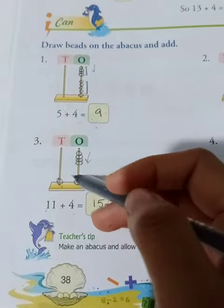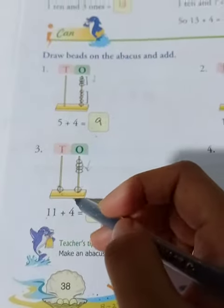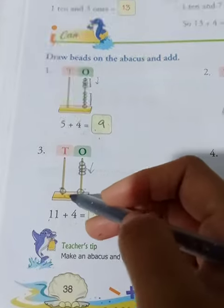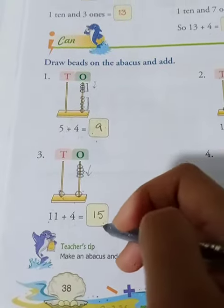Eleven means 1 ten and 1 one - that means 11. And we add 4 more: 1, 2, 3, 4. That means 11 plus 4 equals 15.